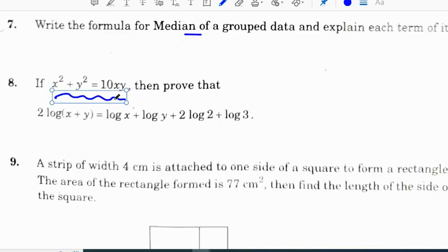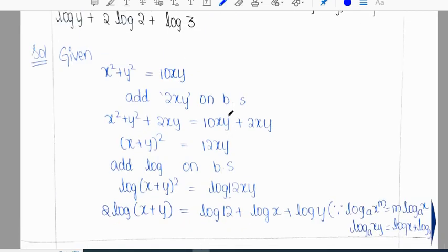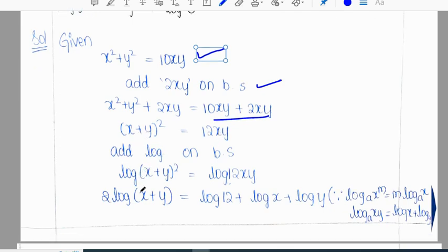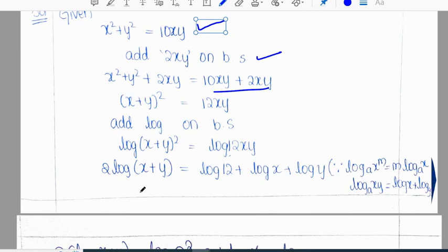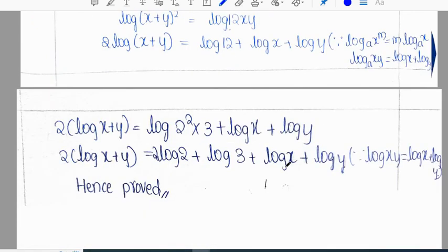If x² + y² = 10xy, prove that 2log(x + y) = log x + log y + 2log 2 + log 3. Given x² + y² = 10xy, add 2xy on both sides: (x + y)² = 12xy. Taking log on both sides: log(x + y)² = log(12xy). Applying formulas: 2log(x + y) = log 12 + log x + log y. Since 12 = 2² × 3, we get 2log(x + y) = 2log 2 + log 3 + log x + log y.